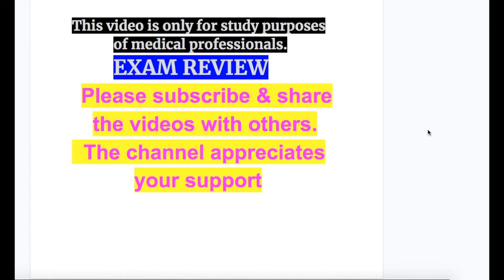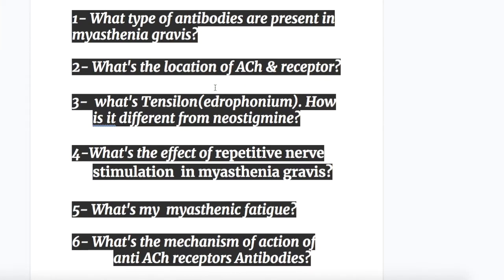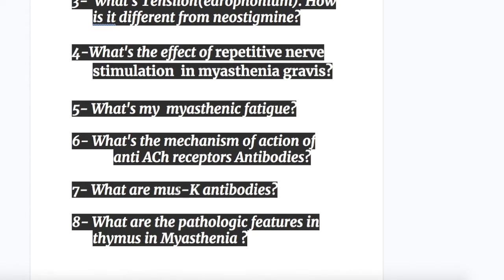In this video we will discuss Myasthenia Gravis and do an exam review. Before we discuss, here are some important exam questions to answer after the topic is done: What type of antibodies are present? What's the location of acetylcholine and its receptors? What's tensilon or edrophonium and how is it different from neostigmine? What's the effect of repetitive nerve stimulation? What's myasthenic fatigue? What's the mechanism of anti-acetylcholine receptor antibodies? What are MuSK antibodies? And what are the pathologic features in the thymus?